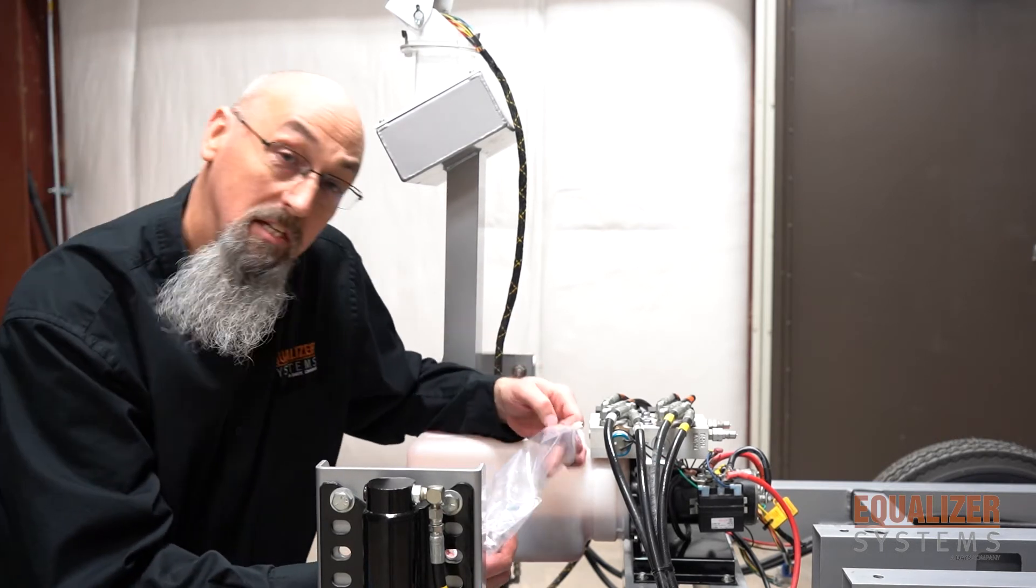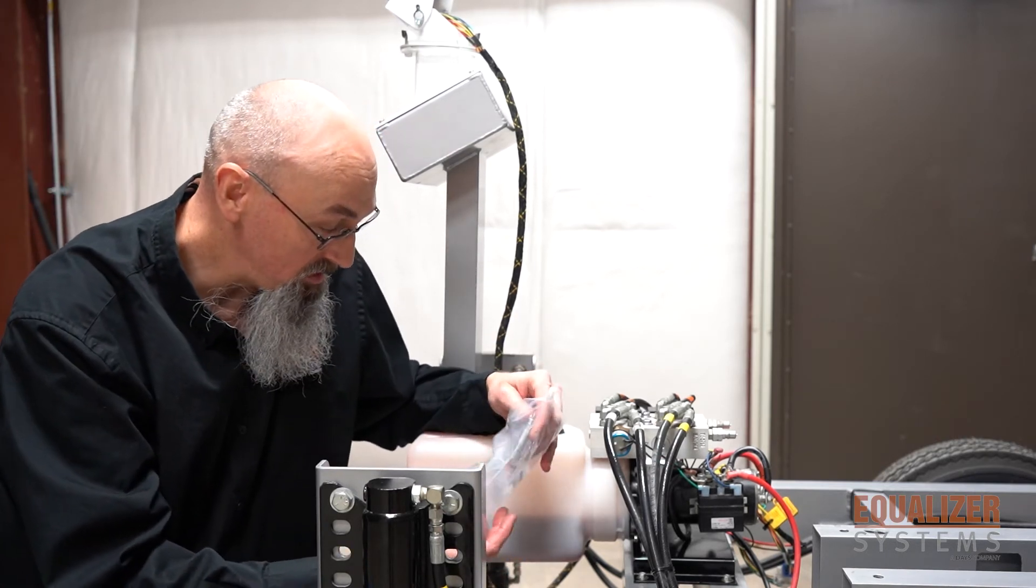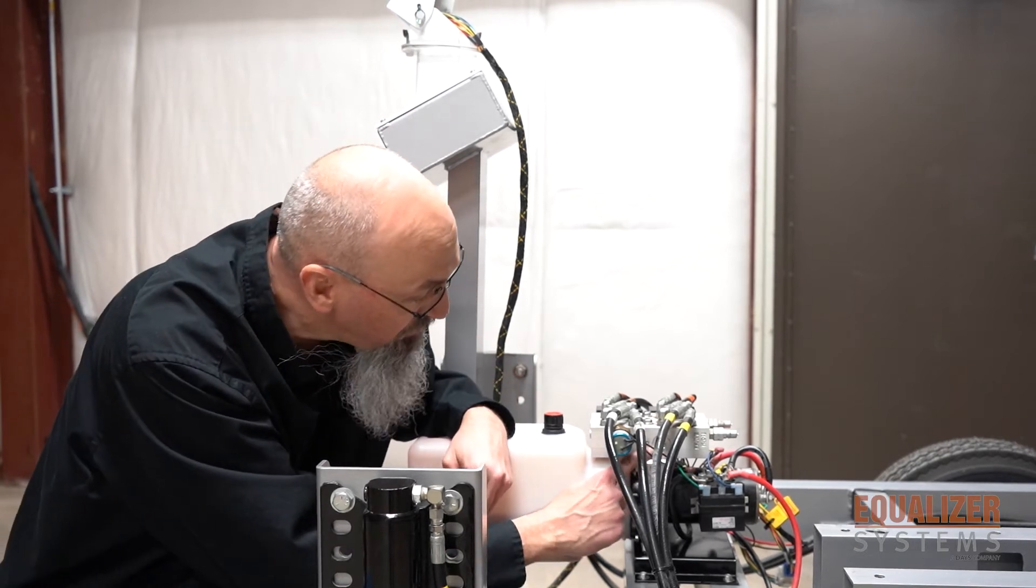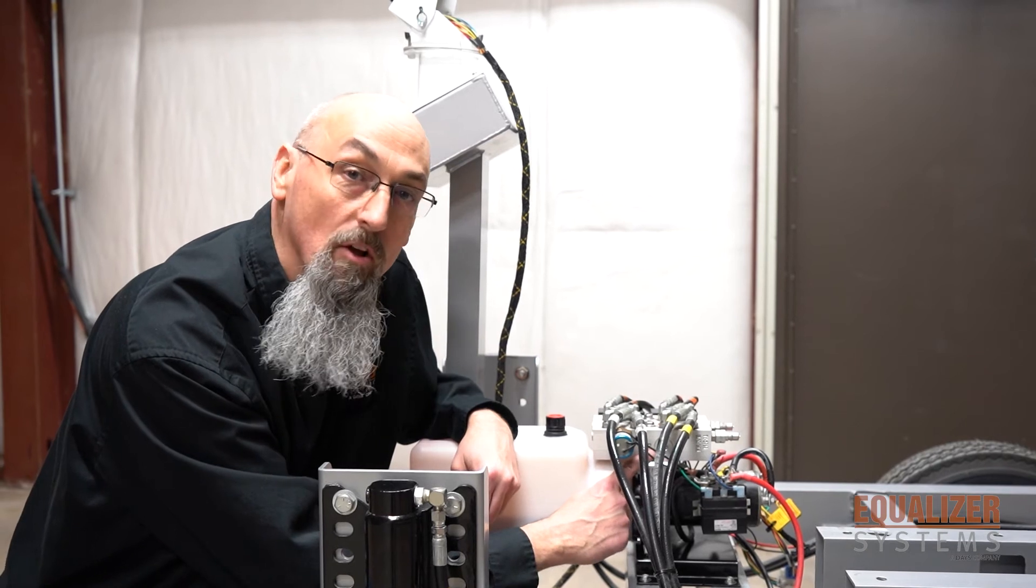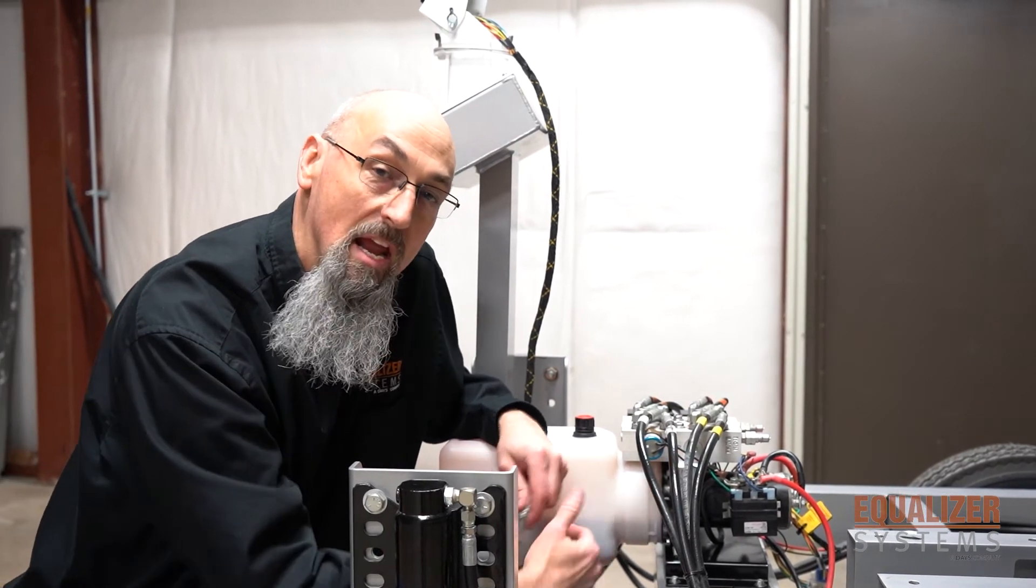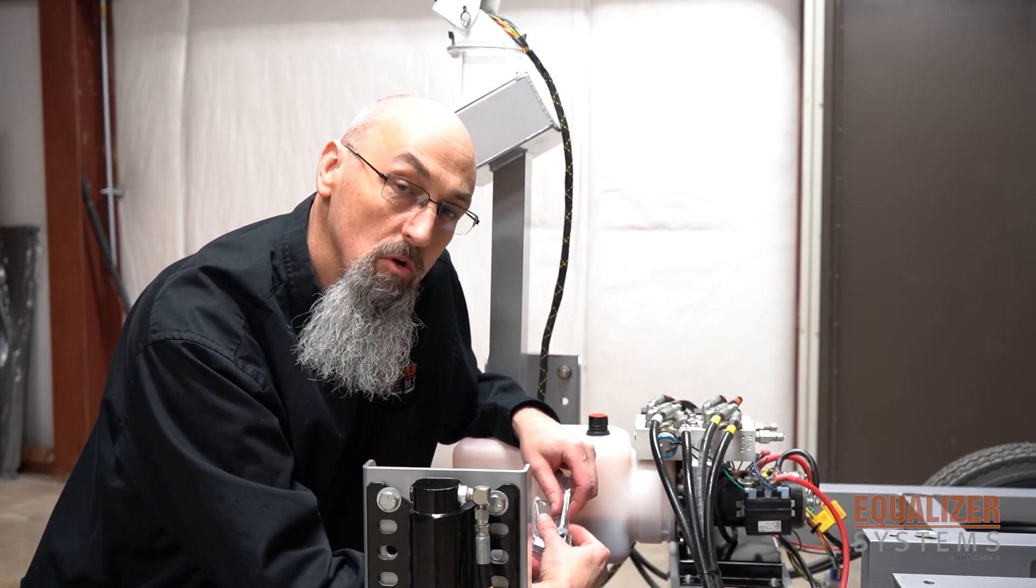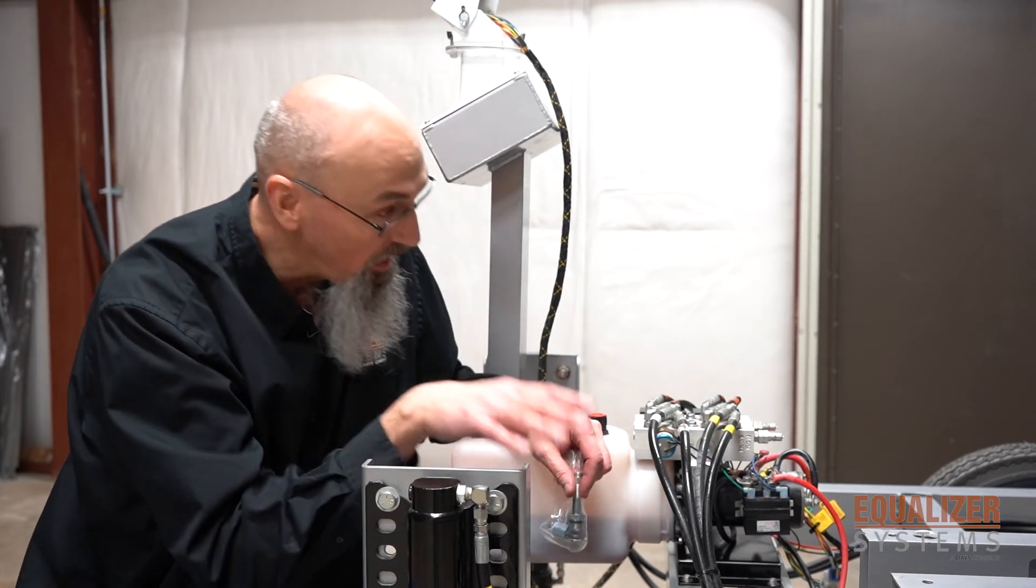The DB2 valve is installed right here beside the pressure switch, where it is actually marked DB2 right on the manifold. To install it, you want to fully extend the jacks like we have now.